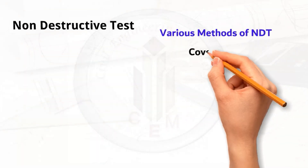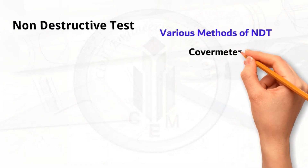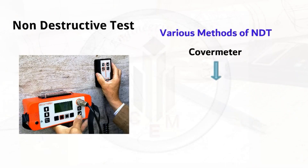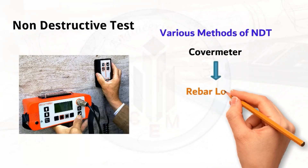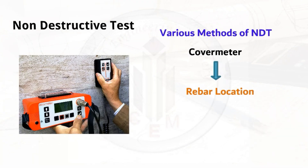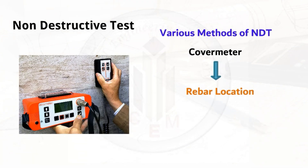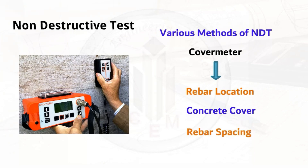The next method is the cover meter test. This test is used to determine rebar location, concrete cover thickness, rebar spacing, and also helps to assess bar diameter and bar orientation.